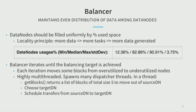For balancing, we have a balancer that works in iterations. In each iteration it moves data from overutilized nodes to underutilized nodes. This is a highly multi-threaded environment: each thread goes to the namenode and calls getBlock to get a list of blocks and the source datanode to move data from. It then chooses a target datanode and schedules transfers, which are performed independently by the datanodes themselves.